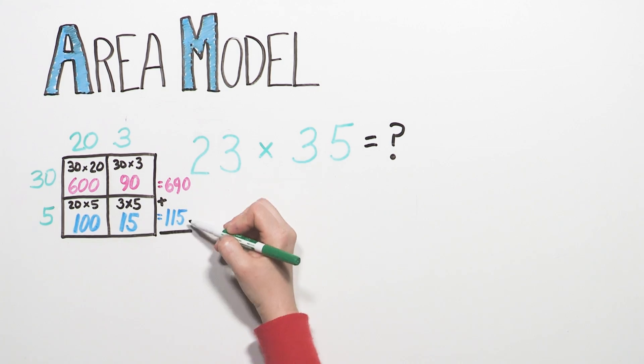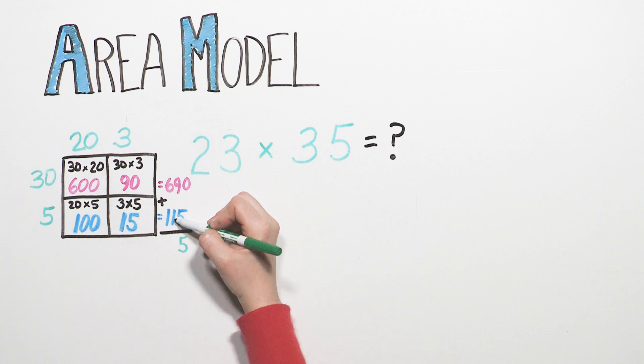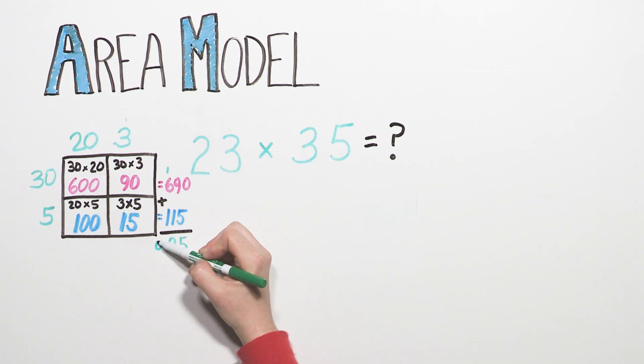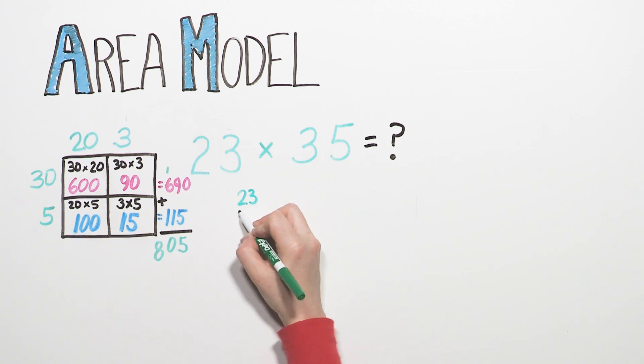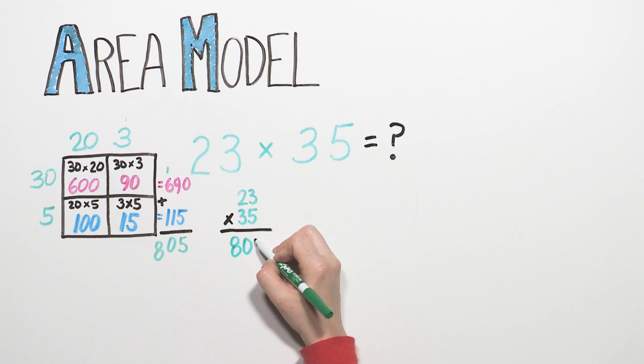By fourth grade, your child will fluently add three-digit numbers, like this, using the standard algorithm. Your child can clearly see why 23 times 35 equals 805.